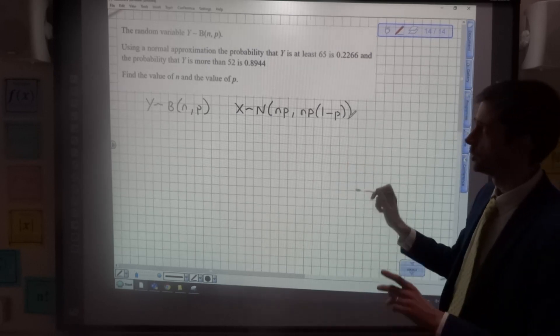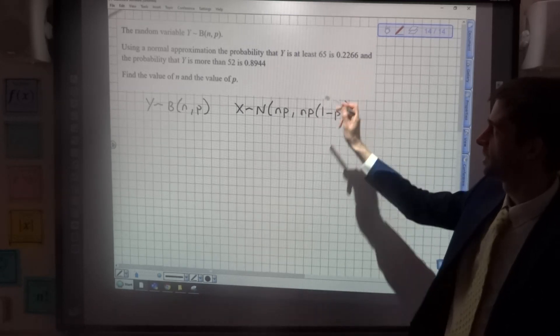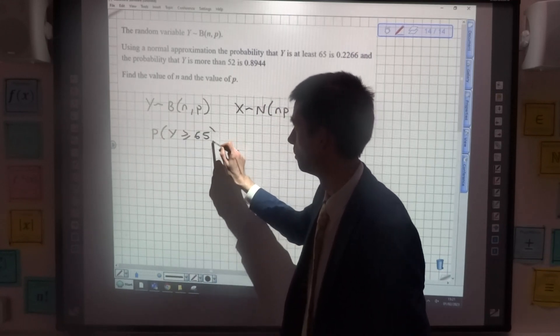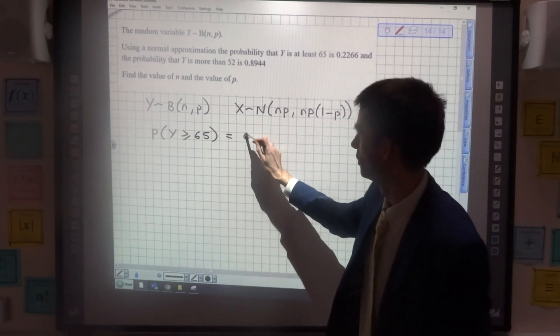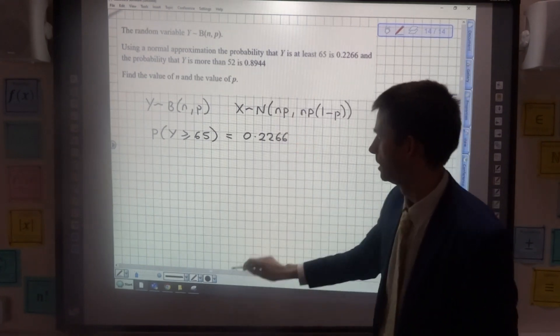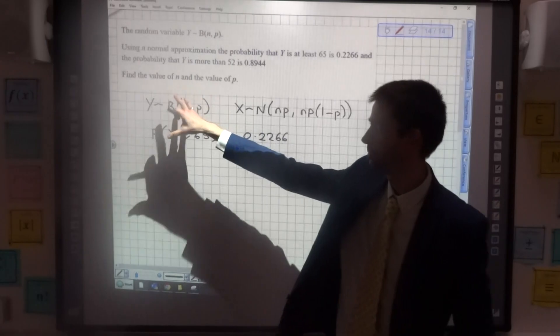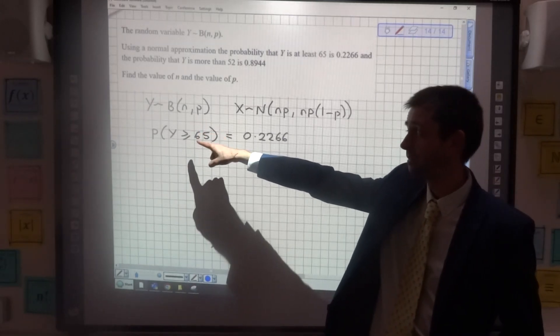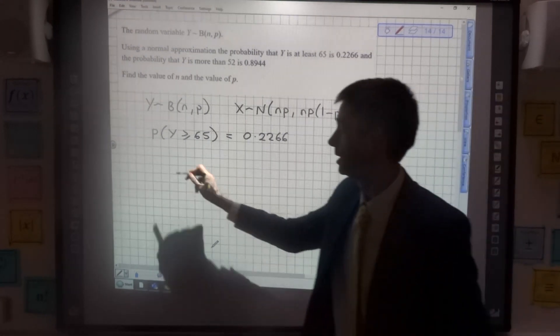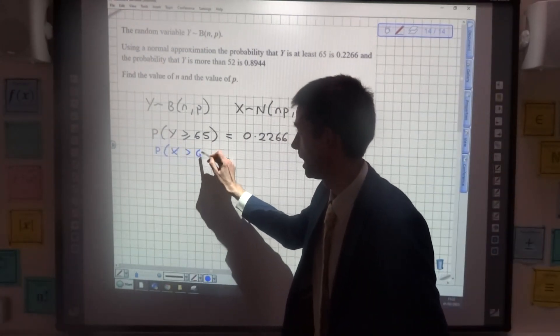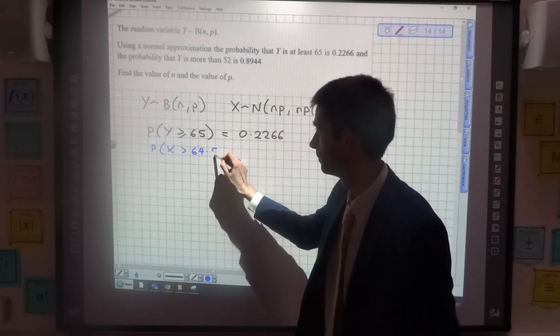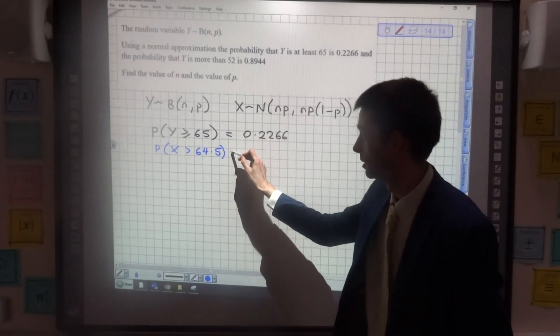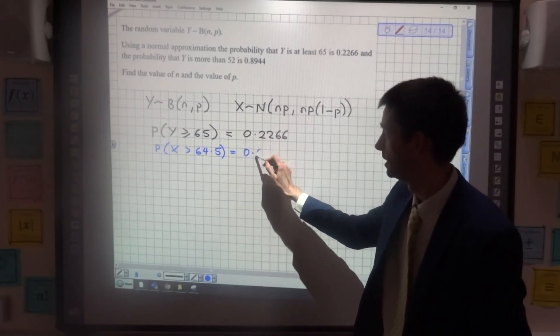So we're then told that the probability that Y is at least 65, so 65 or more, is equal to 0.2266. Now, we've just got to think about our continuity correction here, going from the discrete binomial distribution to a continuous normal distribution. We want to include 65 and everything above it. That means that we're going to need to use for our X the probability that X is greater than 64.5. 64.5 would round up to 65 and above, so the probability that X is greater than 64.5 is 0.2266.